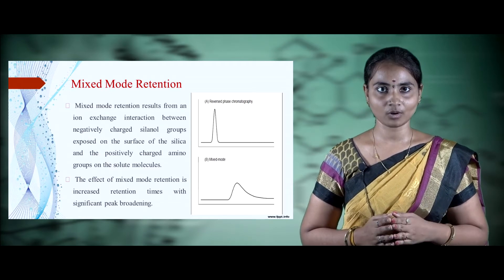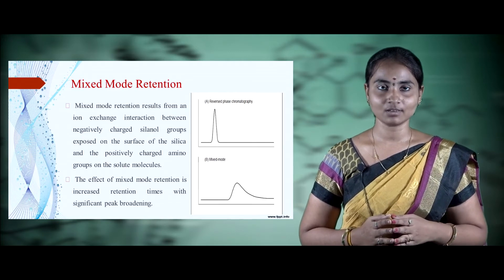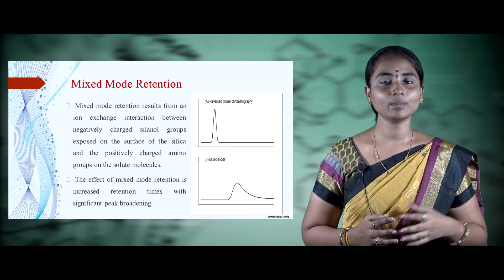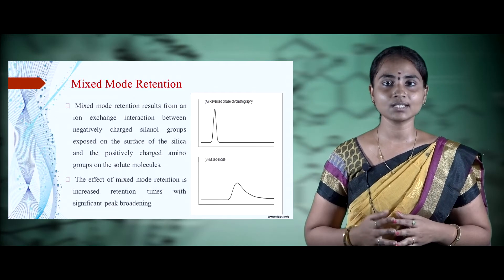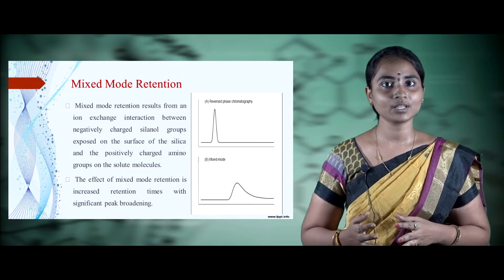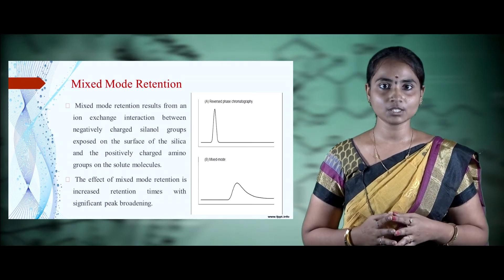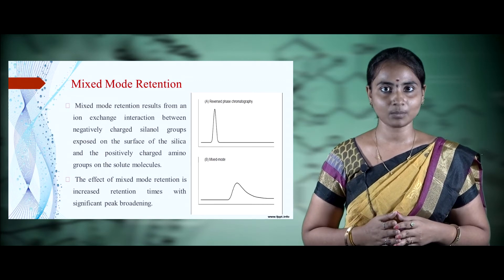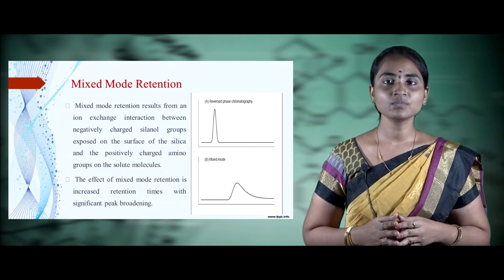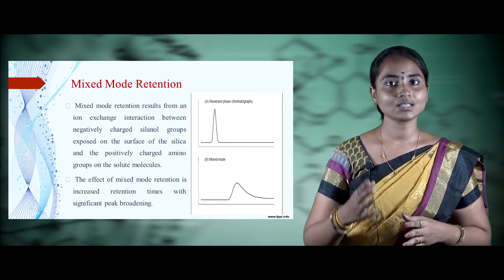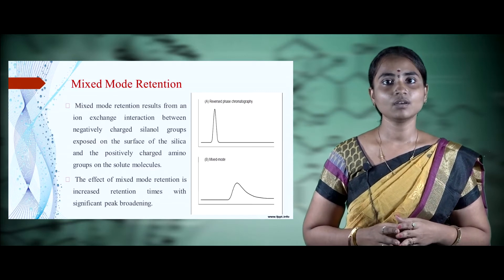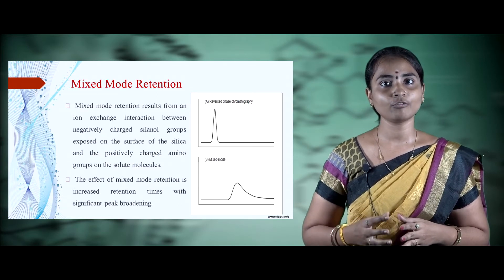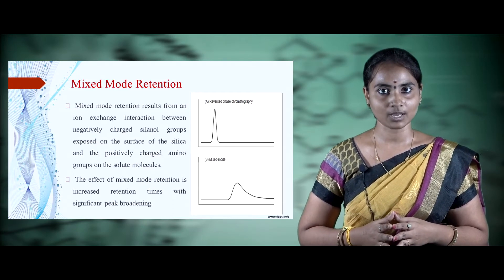Reverse phase chromatography highly focuses on retention of isolated molecules inside the column, particularly mixed mode retention. Mixed mode retention results from ion exchange interactions between the negatively charged silanol groups on the silica matrix and the positively charged amino groups on the components to be purified. This mixed mode retention increases retention times with significant peak broadening, as shown in graphical representation — reverse phase chromatography shows a sharp peak with less retention time, while mixed mode retention shows a broad peak with increased retention time.